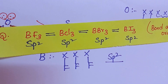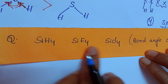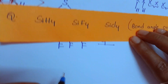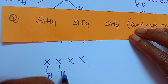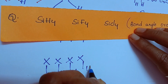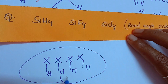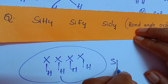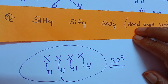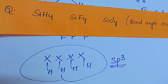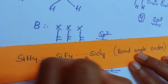One more similar question: SiH4, SiF4, SiCl4. Silicon has 4 electrons in the valence shell. Each hydrogen, fluorine, or chlorine can form one bond each. Total number of bonds is 4, so steric number is 4, and hybridization is SP3. There are no lone pairs — exact perfect geometry — so in this case, bond angles will be the same.